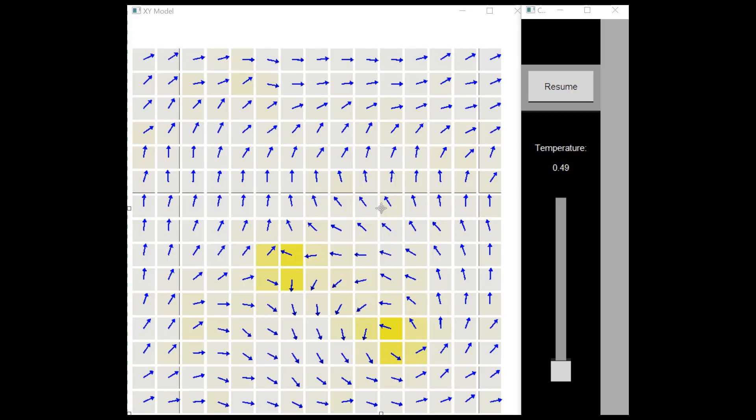Vortices in which the spins rotate the same direction as the path are called positive vortices, as seen here. This is true regardless of the direction of path. You can pause the video and check for yourself.